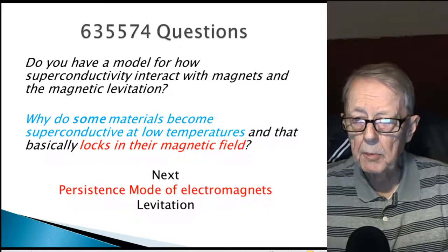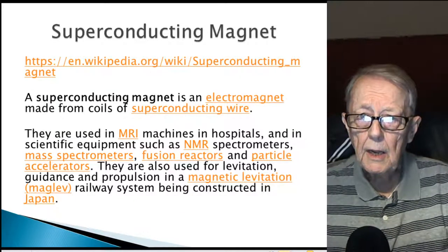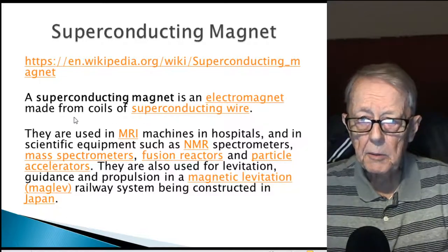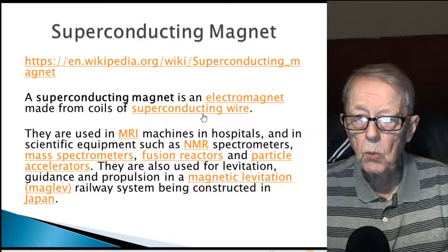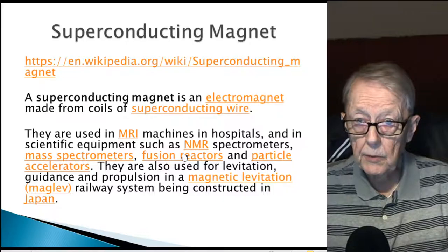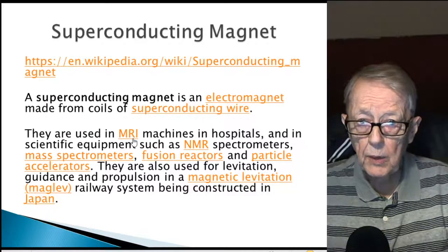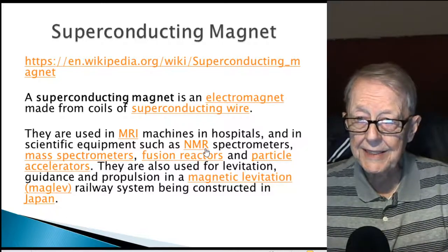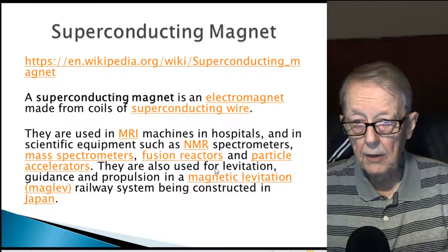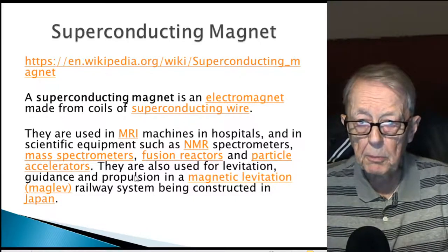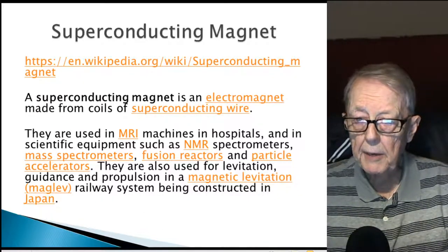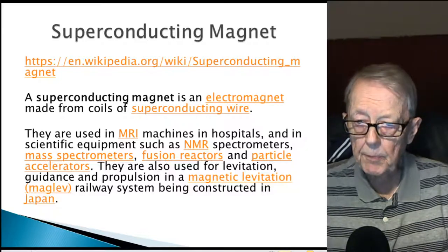A superconducting magnet, from Wikipedia, is an electromagnet made from coils of superconducting wire. They are used extensively in magnetic resonance imaging machines in hospitals and scientific equipment — nuclear magnetic resonance spectrometers, mass spectrometers, fusion reactors, and particle accelerators. They are also used for levitation, guidance, and propulsion in maglev railway systems like those being built in Japan, and are used quite extensively around the world.